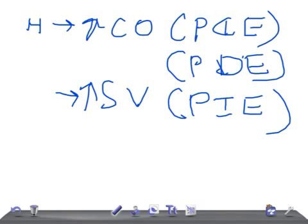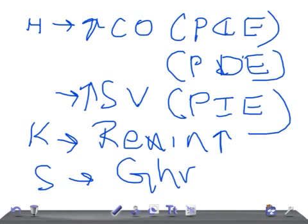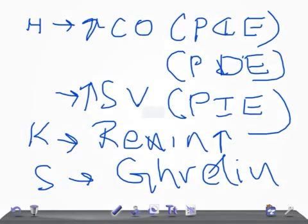When beta-1 receptors are activated in the kidney's juxtaglomerular cells, they increase renin levels. From the stomach, beta-1 receptor activation increases ghrelin hormone secretion. So the major functions of beta-1 receptors are in the heart, with additional roles in the kidney increasing renin and in the stomach increasing ghrelin.